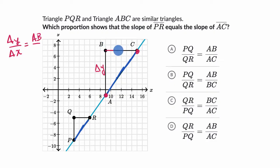And then our change in X is going to be the length of segment BC. That's our change in X, so it's AB over BC.